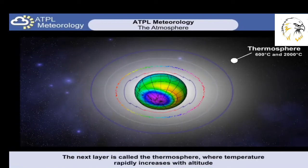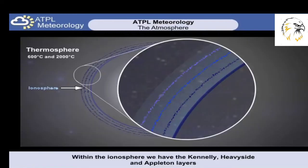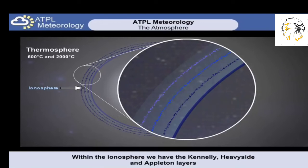Above the mesopause is a layer called the thermosphere. This zone is characterized by a rapid rise in temperature up to about 200 kilometers. Temperatures here can be between 600 and 2000 degrees Celsius. The lower part contains a zone called the ionosphere, where we can have such high ionization levels that long wave radio waves can be reflected back to Earth. Where this reflection is at a maximum is at roughly 110, 160 and 250 kilometer levels. These are respectively called the Kennelly, Heaviside and Appleton layers.